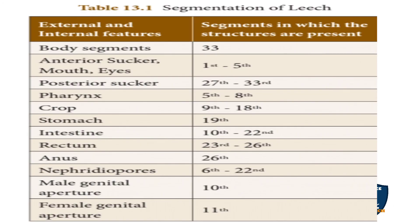The leech body has 33 segments total. Anterior sucker, mouth, and eyes are in segments 1–5. Posterior sucker is in segments 27–33. Pharynx is in segments 5–8. Crop is in segments 9–18. Stomach is in segment 19. Intestine is in segments 20–22. Rectum is in segments 23–26. Anus is at segment 26. Nephridiopores are in segments 6–22. Male genital aperture is at segment 10, and female genital aperture is at segment 11.